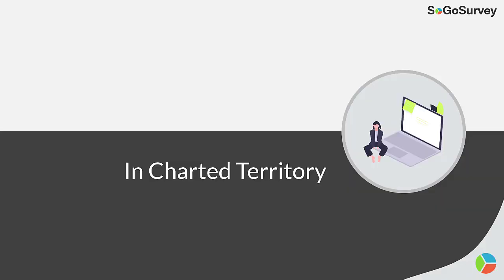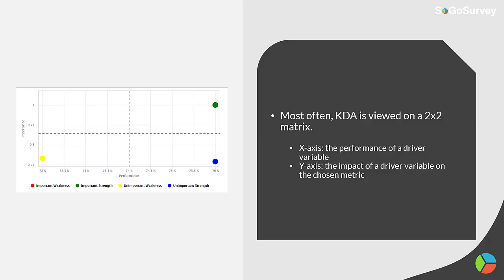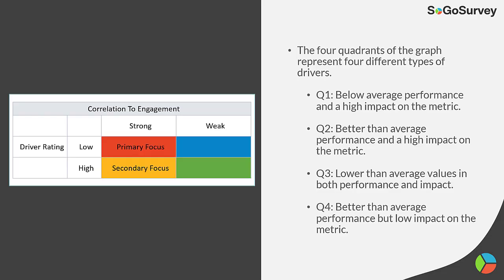Most often, Key Driver Analysis is viewed on a 2x2 matrix, with the x-axis being the performance of a driver variable and the y-axis being the impact of a driver variable on the chosen metric. The four quadrants of the graph represent four different types of drivers.